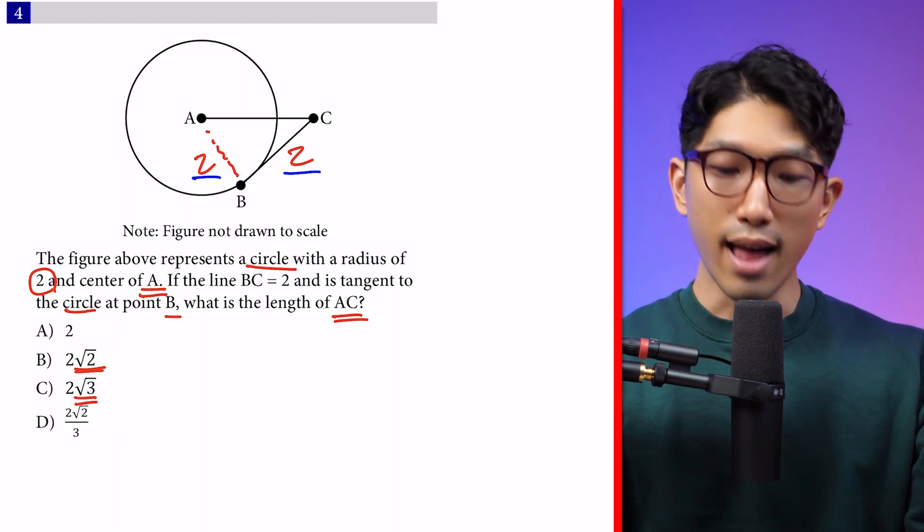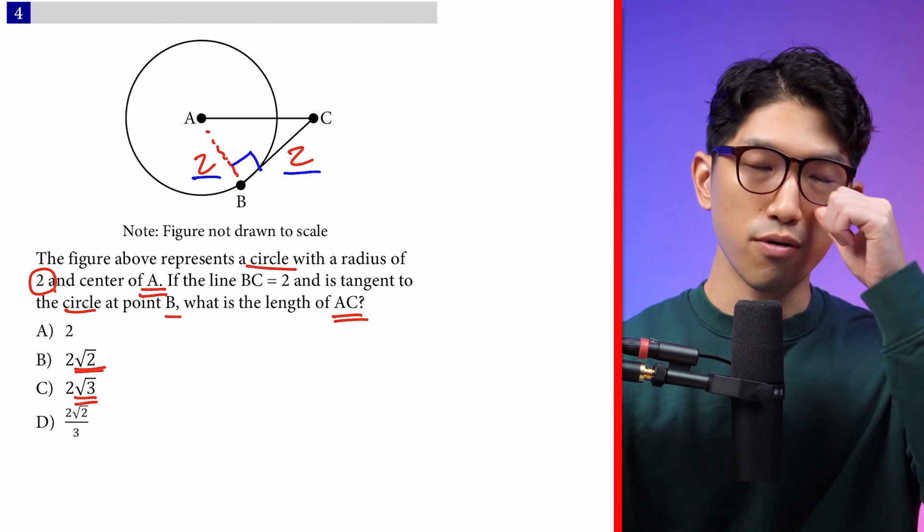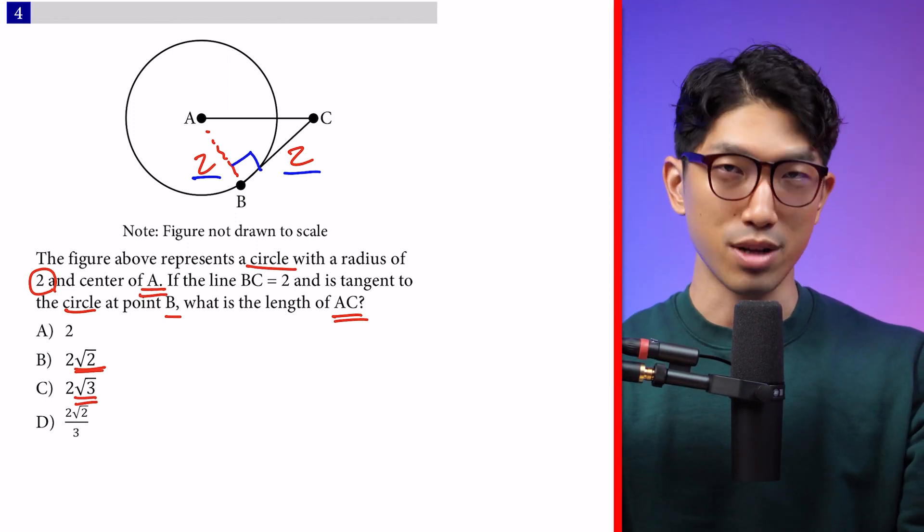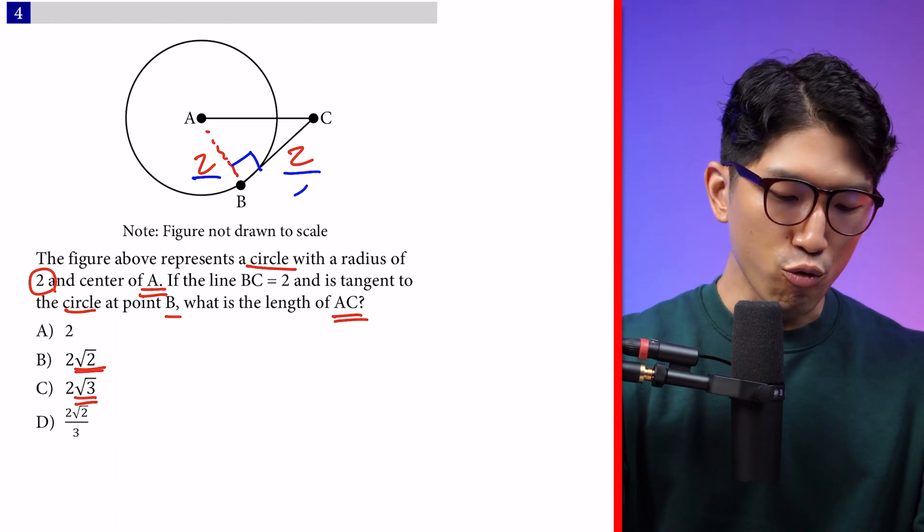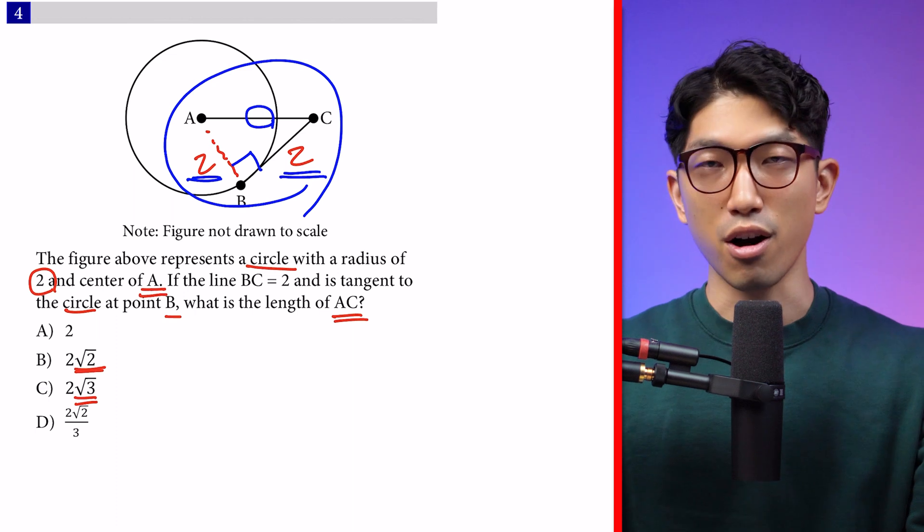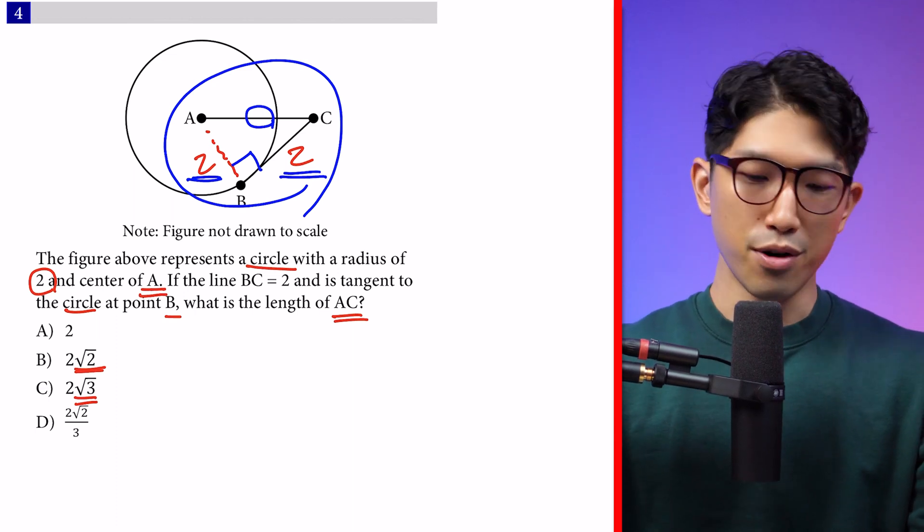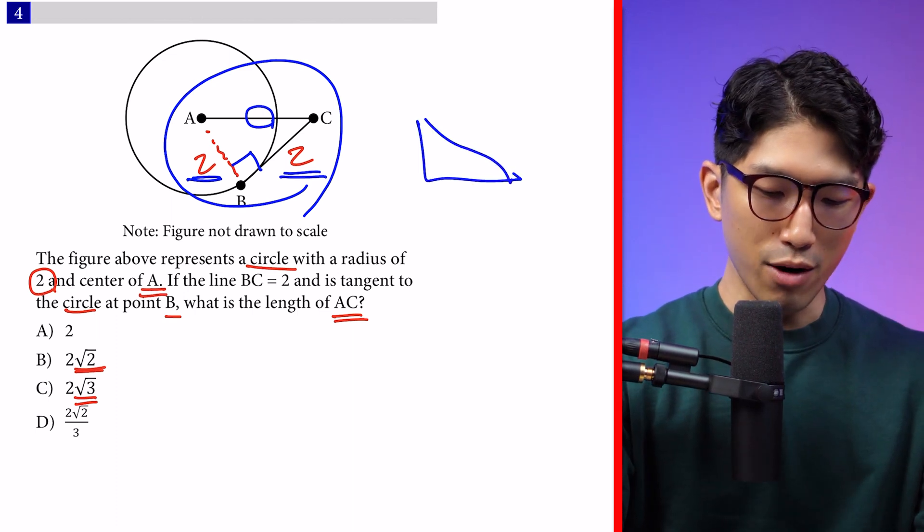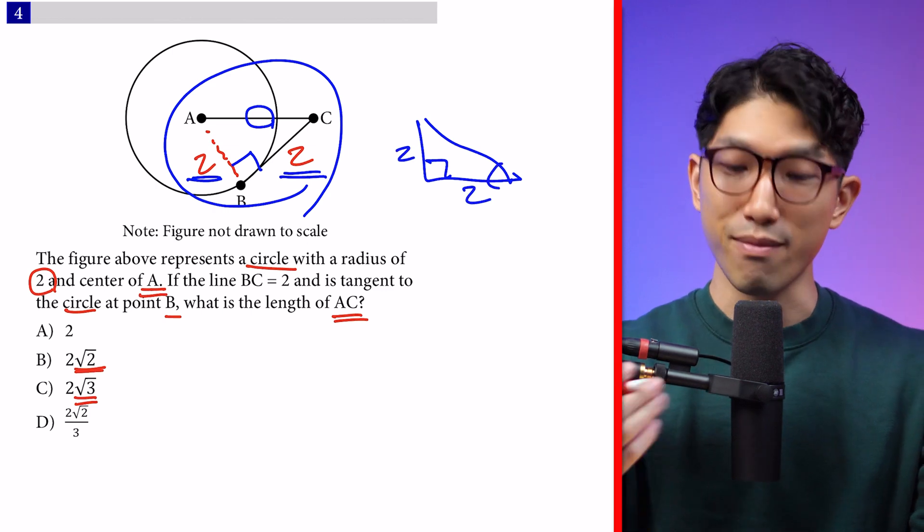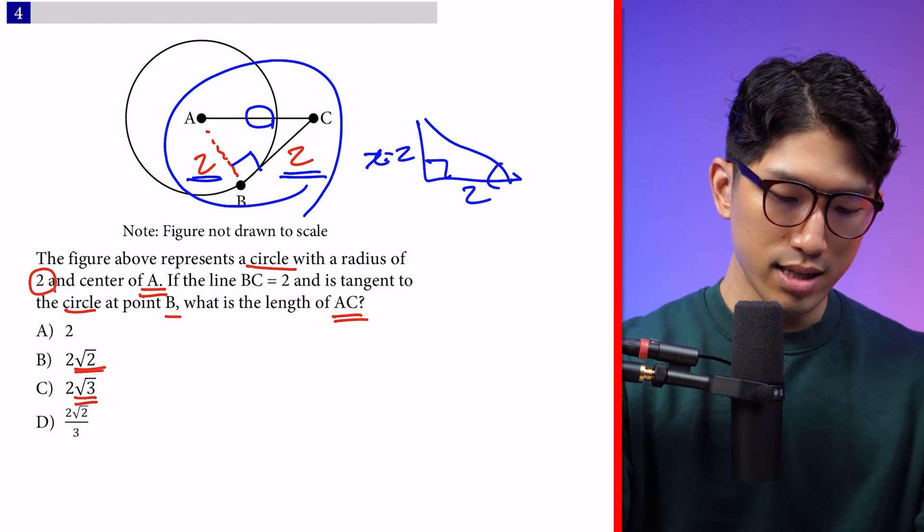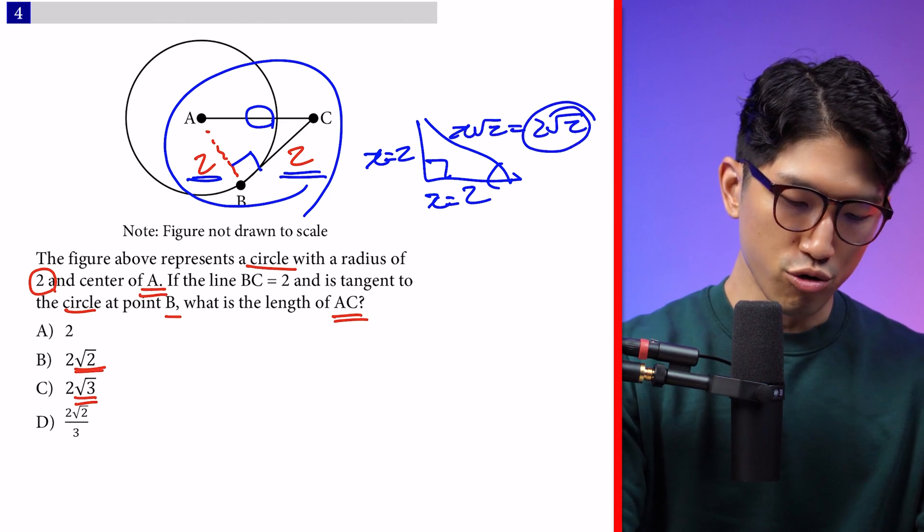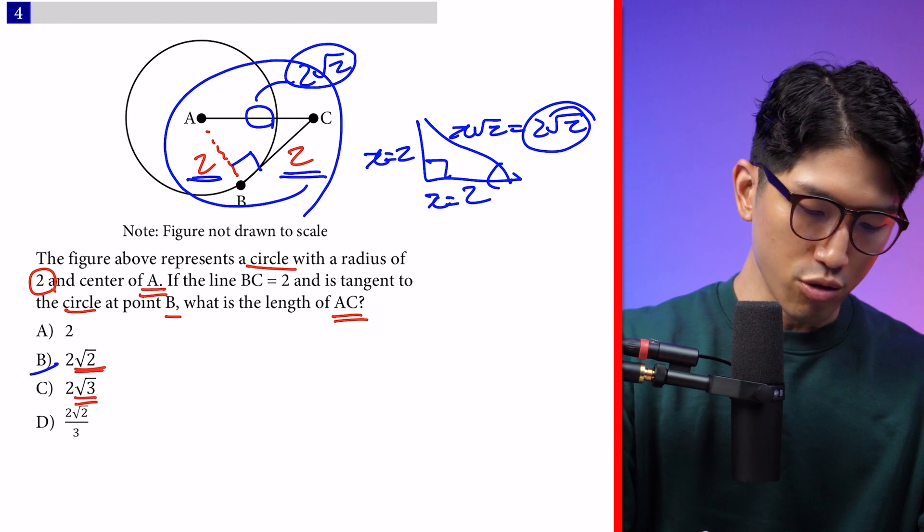Based on the circle characteristics we learned from the circle lecture, a line tangent to the circle forms a right angle with the radius every single time. Now we have a right triangle with side lengths of 2 and 2 and a hypotenuse. We could use Pythagorean theorem, but we know whenever a right triangle has same length and same length, it's a 45-45-90 triangle, which is x, x, and x√2 here, which means the hypotenuse is 2√2. So our answer is choice B.